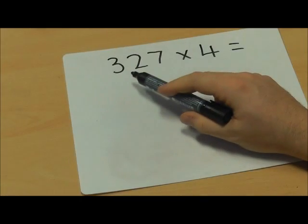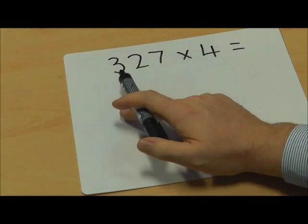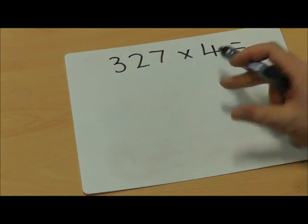We're going to look at using the short multiplication method for multiplying by a single-digit number. So our sum here is 327 multiplied by 4.